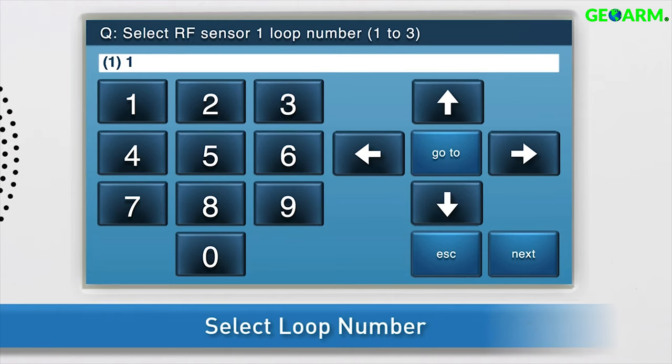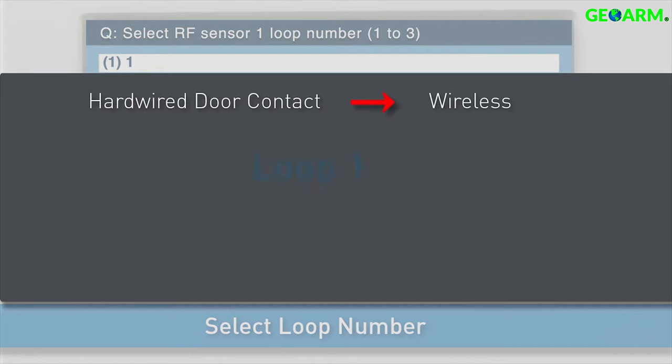Next, select the loop number. The thin door window contact can function in a few different configurations, which dictate loop number. If you're converting a hardwired door contact to wireless,